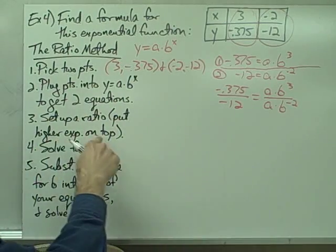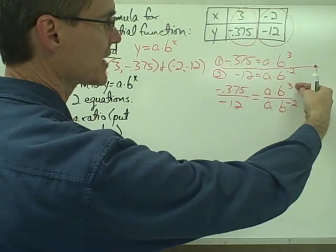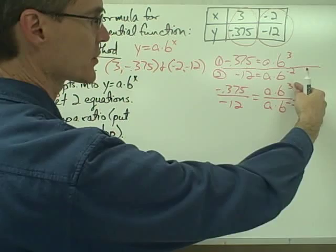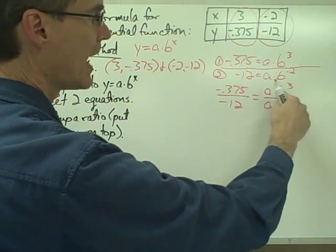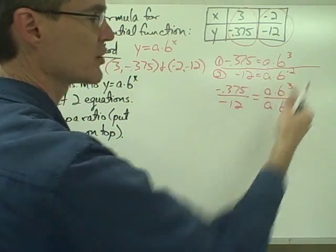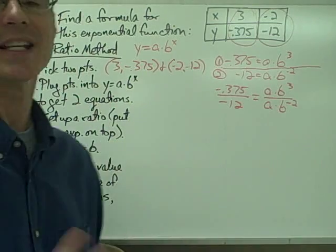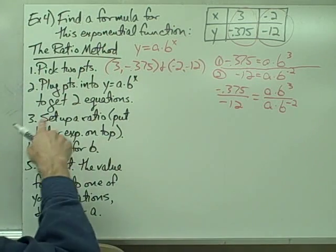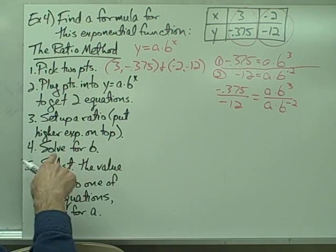Now, notice it says put the higher exponent on top. It's talking about the exponent of the b parameter. So I want b to the third. Since 3 is higher than negative 2, I want this particular equation on top. That's not absolutely essential, it just makes the math a little bit easier, makes the arithmetic a little bit easier. So set up a ratio, put the higher exponent on top.